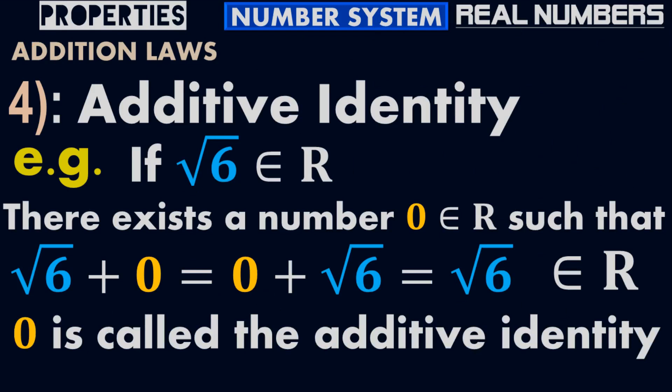Suppose A equals √6. √6 belongs to the real numbers as an irrational number. There exists a number 0 such that √6 plus 0 equals √6, and 0 plus √6 equals √6, so ultimately it equals √6. The addition of 0 on either side does not affect the value √6, which belongs to the real numbers as an irrational number.